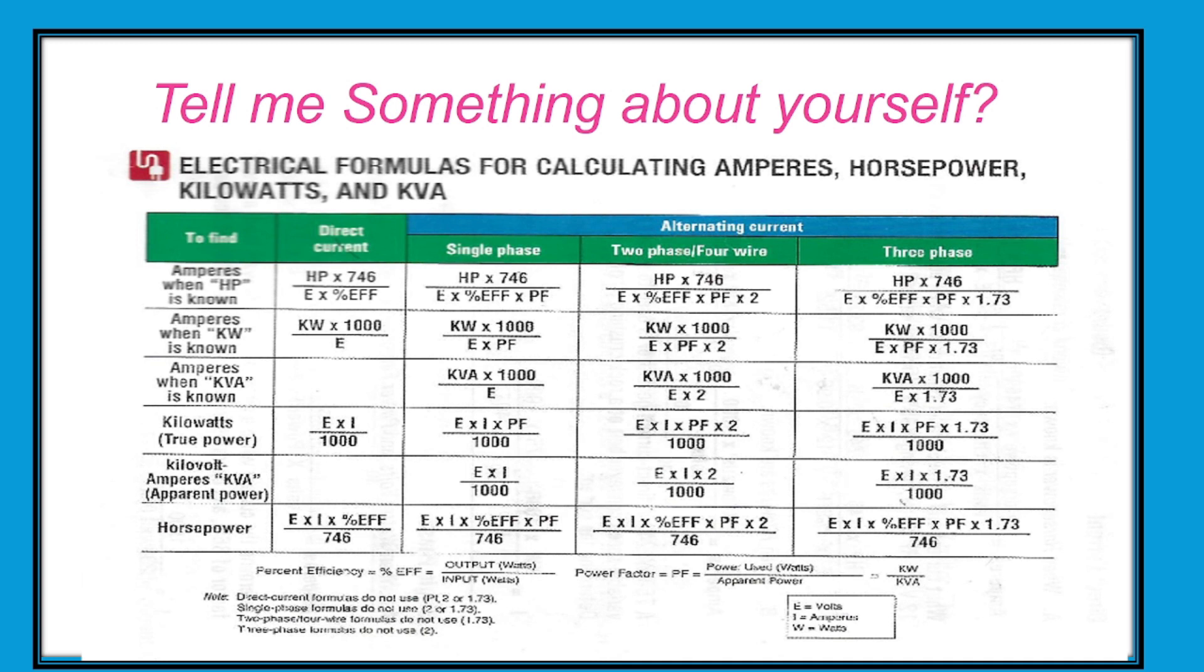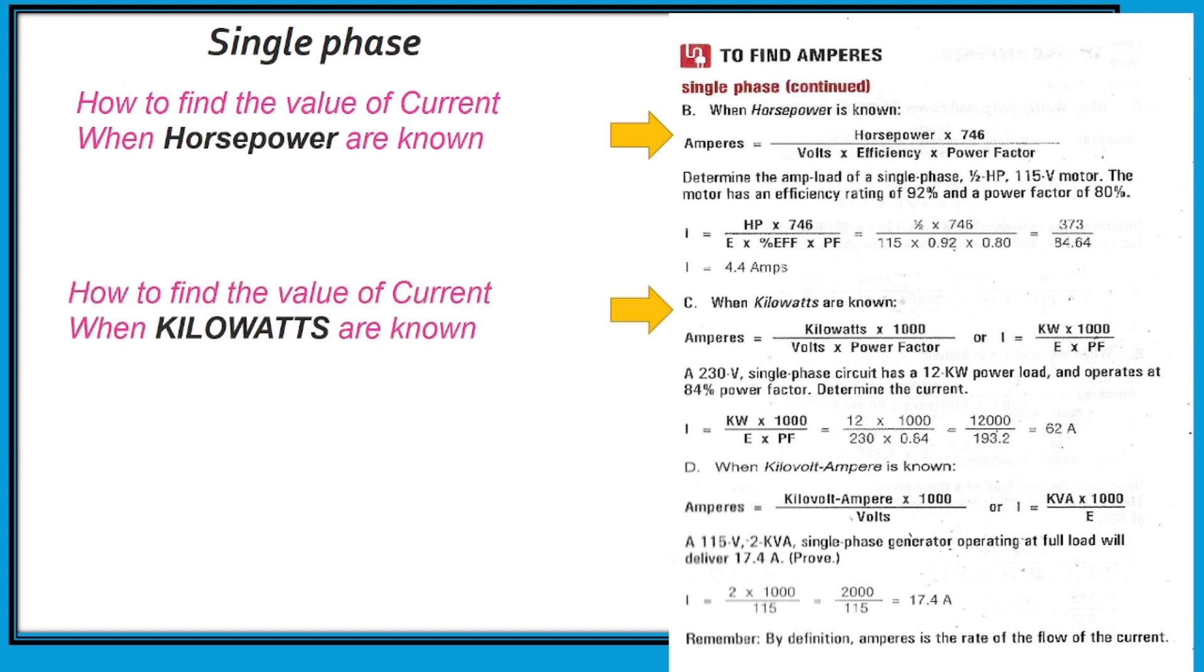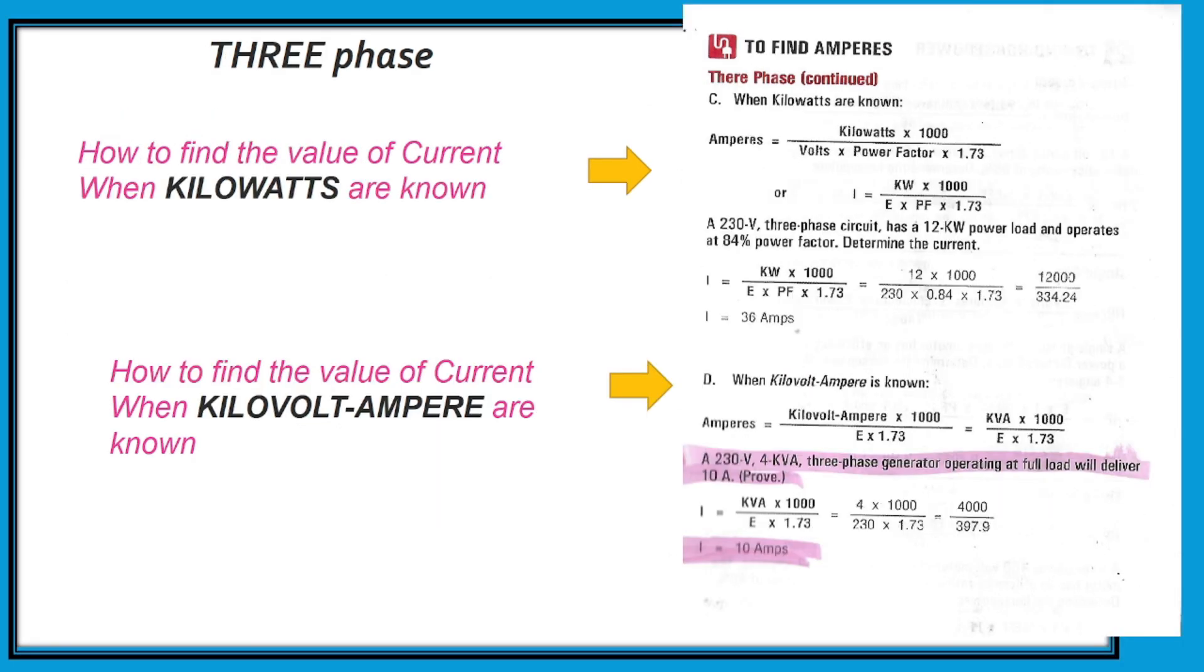The next one is electrical formulas for calculating amperes, horsepower, and kilowatt. We have an example here. How to find the value of current, look at it. Just pause the video. And to find the current with known kilowatts, and to find the value of kilowatt amperes.